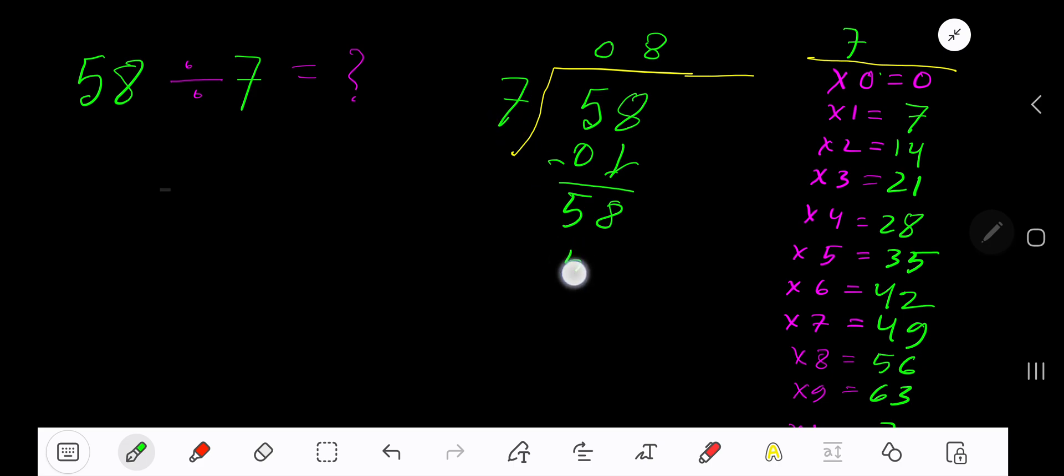8 times 7 is 56. Subtract and you get 2. So our answer is 8 remainder 2.